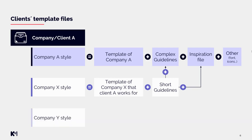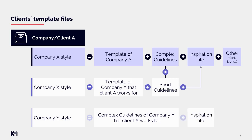There may also be a situation where we have a company Y style. This style has complex guidelines of company Y and does not have any separate template file — and that is also a situation that happens on many tasks. Sometimes you can simply take the template out of the regular guideline file, because the template is used in all files such as the inspiration file and guideline file. You just clear all the slides from the guidelines and you have your template. Company Y also has its own inspiration file, so the style is fully defined by itself. You simply follow these two files and do not need to apply any additional guidelines from the main company.